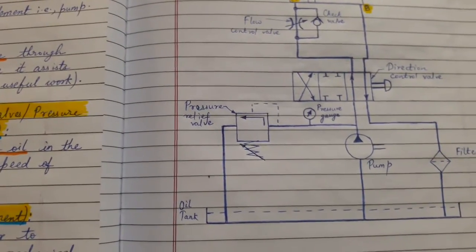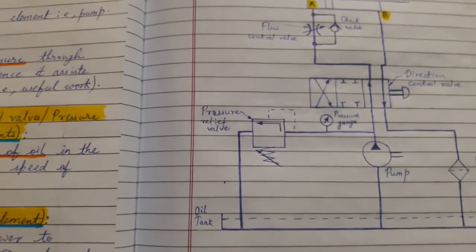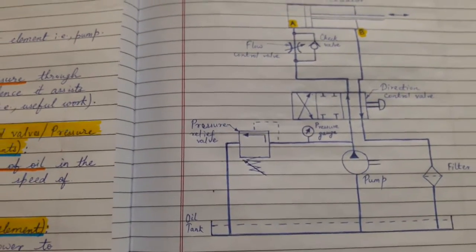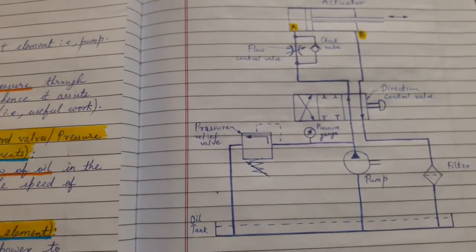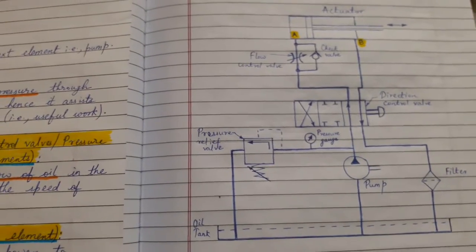Hoses, pipes, pipe fittings are the part of fluid power pipeline. So this was regarding the function of each element in hydraulic system.